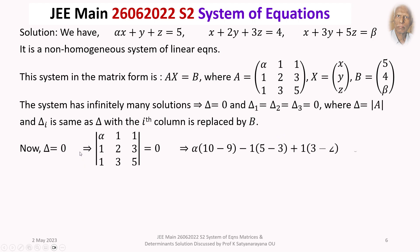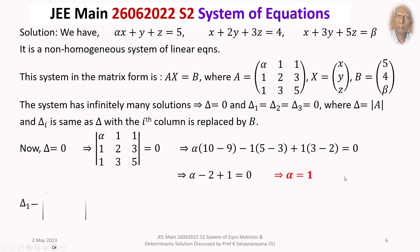Now, delta equals 0. Delta is the determinant of A, which has first row (alpha, 1, 1), second row (1, 2, 3), and third row (1, 3, 5). Expanding this determinant by the first row and simplifying, we get alpha equals 1. So delta equals 0 implies alpha equals 1.